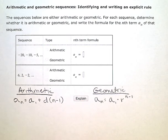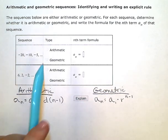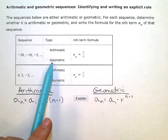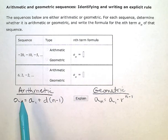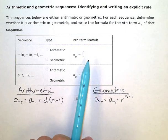Arithmetic and geometric sequences: identifying and writing an explicit rule. The sequences below are either arithmetic or geometric. For each sequence, determine whether it is arithmetic or geometric and write the formula for the nth term a_n of that sequence. I need to look at each of my sequences here, and the first thing I need to do is decide if they're arithmetic or geometric, because that is going to affect the formula that I write for the nth term.